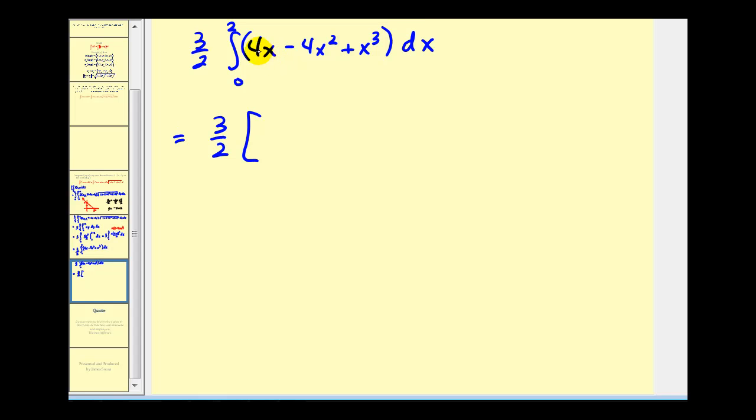Integrating, we have 2x² - (4/3)x³ + x⁴/4, evaluated from 0 to 2.